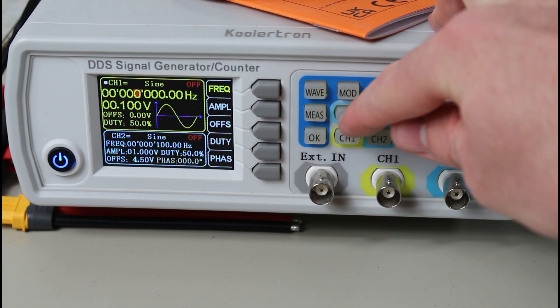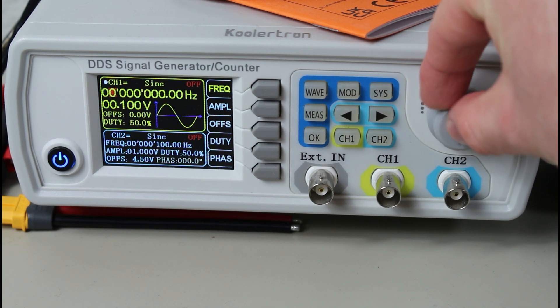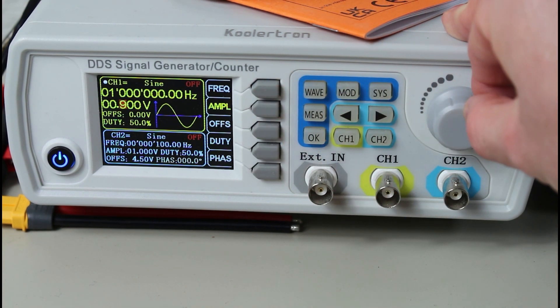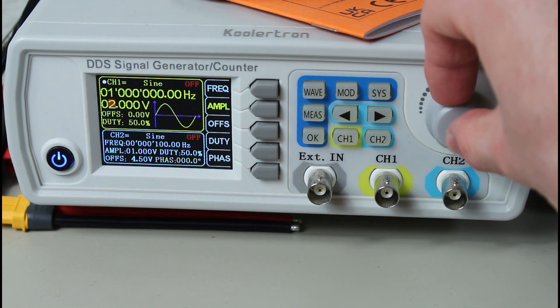We first need to be able to select the frequency in which the output oscillates. We then need to be able to adjust the amplitude of the output frequency. And finally, we need to be able to choose what the shape the output should be, with the most basic options being square, triangle, and sine.